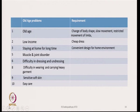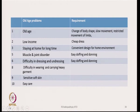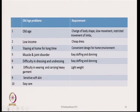The design has to be convenient for the home environment, keeping in mind what type of environment exists within the home. Then muscle and joint disorder — therefore we have to design easy doffing and donning type. Difficulty in dressing and undressing also needs easy doffing and donning. Difficulty in wearing and carrying heavy garments means the garment has to be light in nature — we have to take care of the weight of the garments and how to reduce weight.